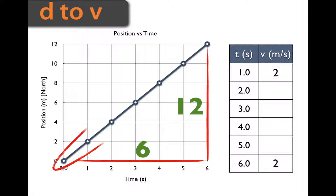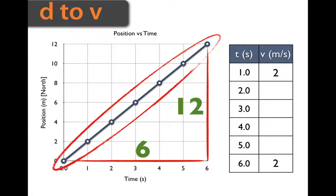Because it's a constant velocity and the line is straight, every one of our points is going to be 2 meters per second. That was pretty easy.